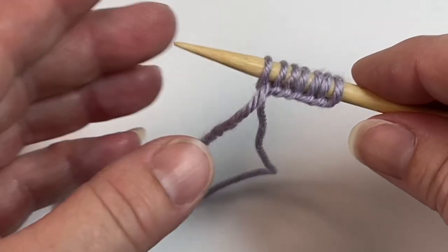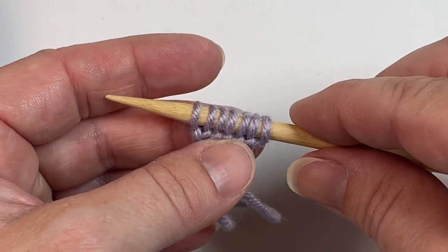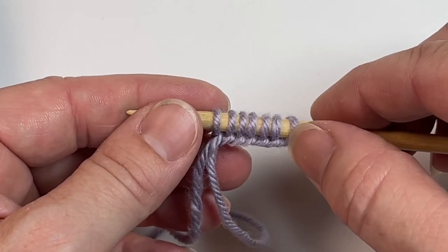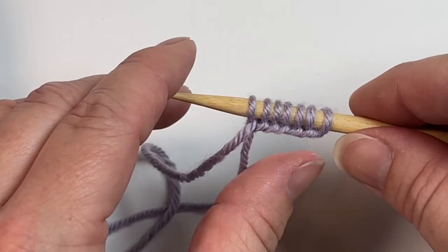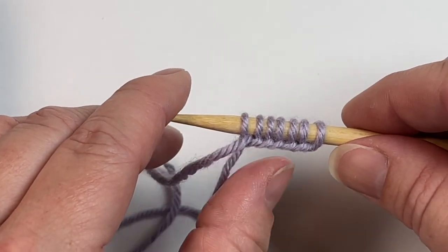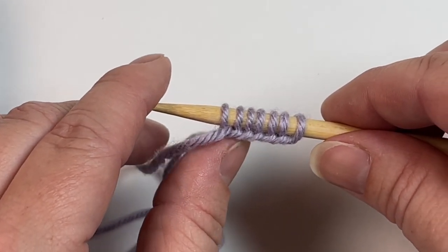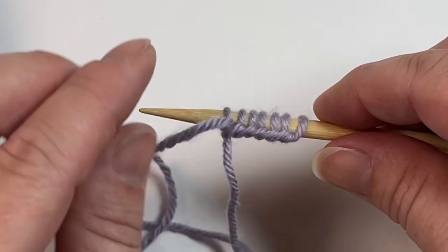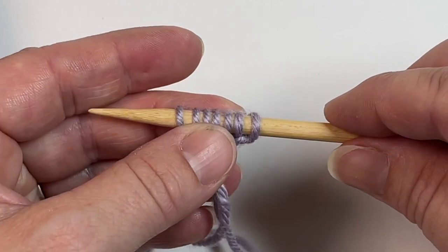That's it. You will cast on however many stitches you need according to your pattern. Remember, this first stitch always counts as a stitch. It has this lovely edge. It looks really nice with a standard bind off as well. They pair well. On the wrong side here you'll see our purl bumps, and that's really all there is to the long tail cast on.